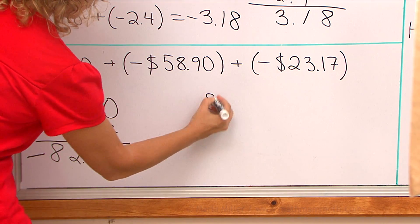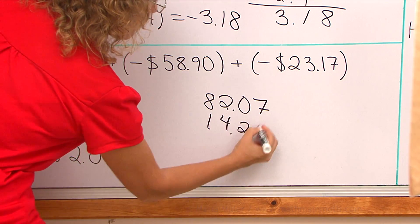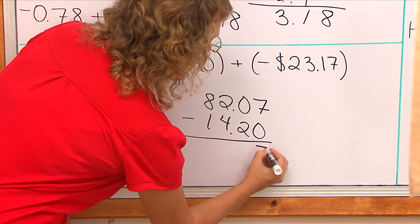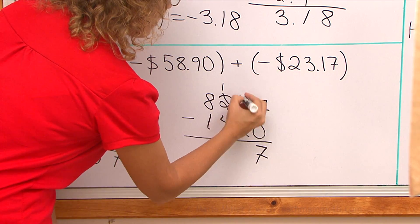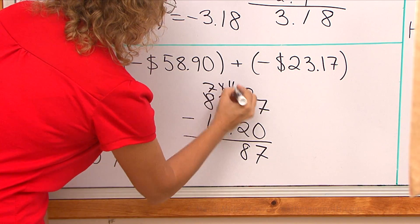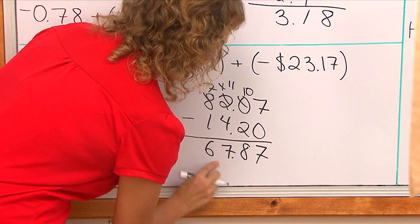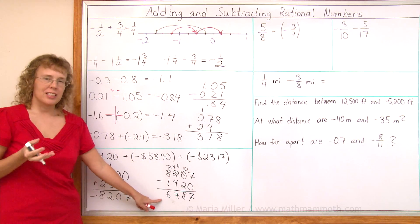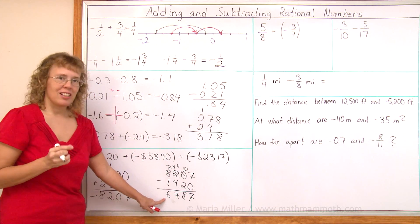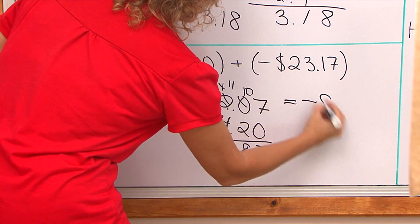So we will take 82.07 and 14.20 and subtract here. And here's my negative. Seven, seven, eight, and seven. Now is this the final answer? No, it's not, but it's almost. This is the final answer if I take it negative, the final answer is negative that many dollars. $67.87.